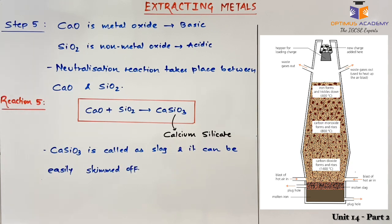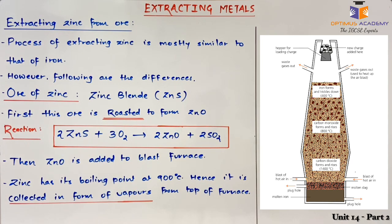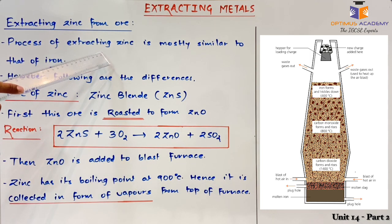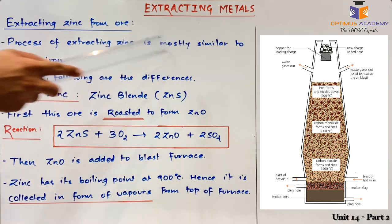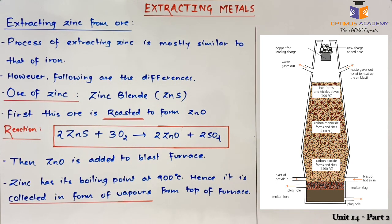In the next part of the video, we are going to discuss how to extract zinc from its ore using the blast furnace. The process of extracting zinc from its ore is mostly similar to that of iron. However, there are two major differences in the extraction of zinc and the extraction of iron.